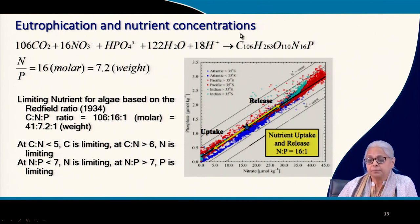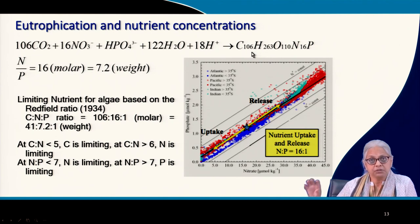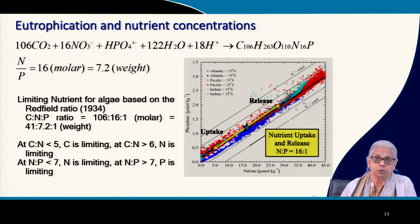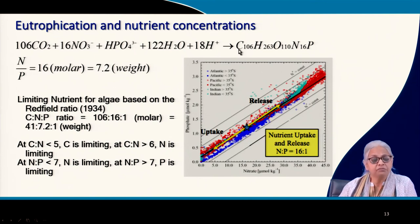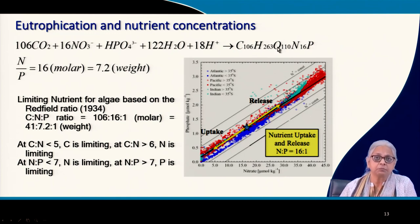The empirical formula for an algal cell gives us the stoichiometric molar ratios. For a bacterial cell, we use C5H7O2N, available in all textbooks. For the algal cell, focusing on carbon, nitrogen, and phosphorus: on a molar basis the nitrogen-to-phosphorus ratio is 16, and when multiplied by molecular weight it becomes 7.2.